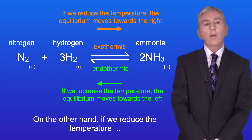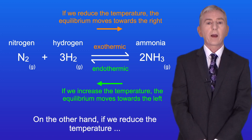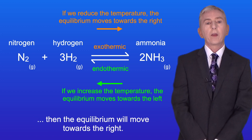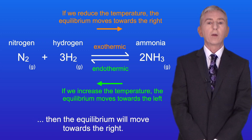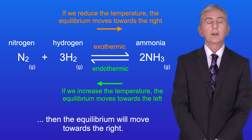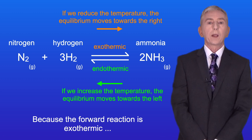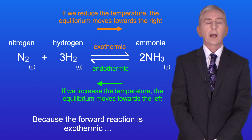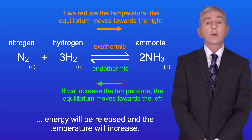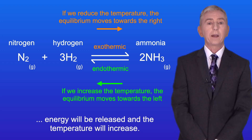On the other hand, if we reduce the temperature then the equilibrium will move towards the right. Because the forward reaction is exothermic, energy will be released and the temperature will increase.